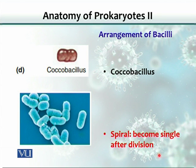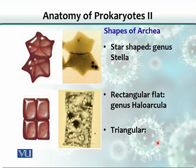Spirochetes and spirals, after cell division, remain single. Archaea, much like bacteria, also come in three shapes. They could be star-shaped, rectangular, or even triangular.